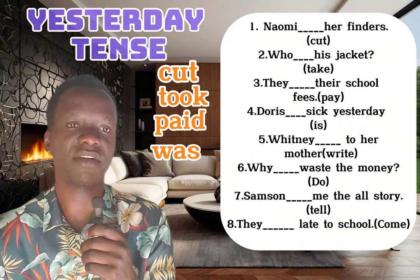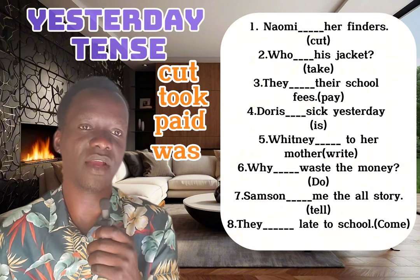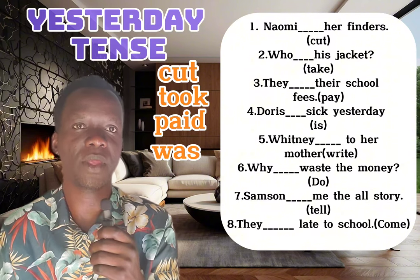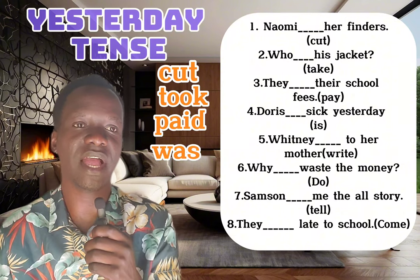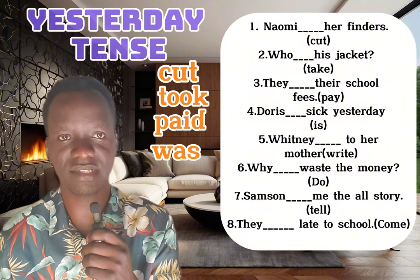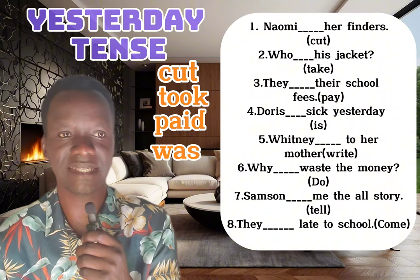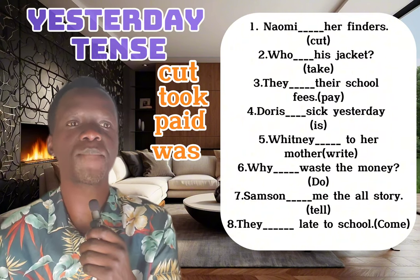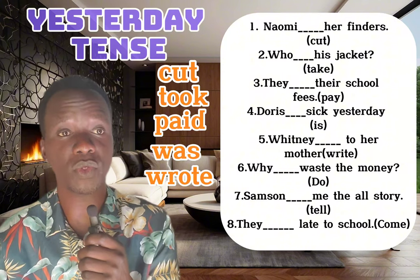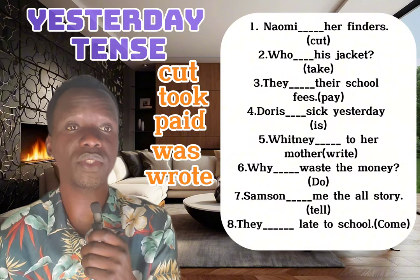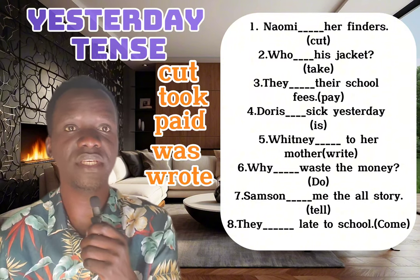Number five: Whitney ___ to her mother. The verb given is 'write,' which is present. We change 'write' into past — 'write' becomes 'wrote.' So: Whitney wrote to her mother yesterday.